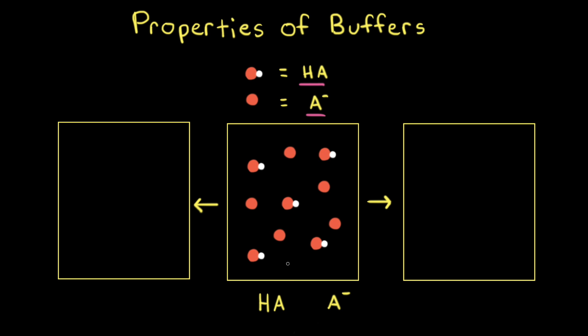For our first particulate diagram, let's count out how many particles we have of each. First, let's count how many HA's we have. There's 1, 2, 3, 4, 5 HA's, and for A- there's 1, 2, 3, 4, 5 A-minuses. When looking at a particulate diagram of a buffer, water molecules are usually omitted for clarity. Also keep in mind that this particulate diagram is just meant to represent a small portion of the solution, so we can get an idea about what's happening in the entire solution.